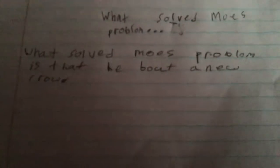You can start working in the art like this and it makes sense. You must go like this. What solve? Like this — what solved Mo's problem is that he bought a new crow. What are they doing?